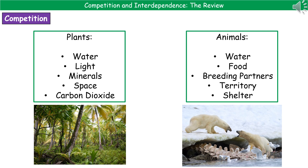If we think about animals, then we've got water and food, then we come on to things like breeding partners — they quite often fight about that in the animal kingdom — the territory in which they live, because they obviously need a certain area in order to find all these things, and also shelter to keep them out of the elements. So just make sure you know a couple of examples of the things that both plants and animals will compete for.